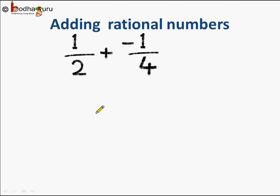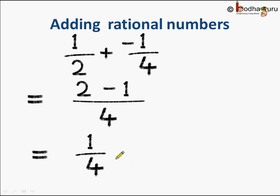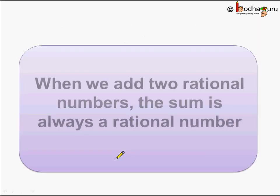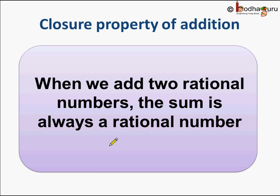Let us add two rational numbers and see what happens. Taking LCM of 2 and 4 we get 4, and in the numerator we get 2 minus 1, so the answer is 1 by 4. This is a rational number, so we can say when we add two rational numbers the sum is always a rational number. This is the closure property of addition.